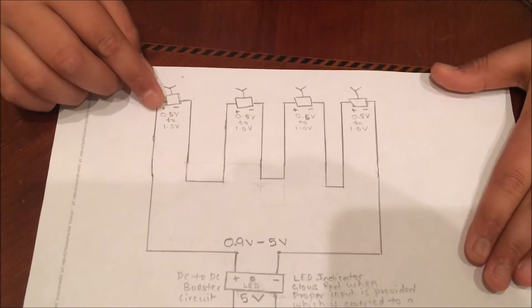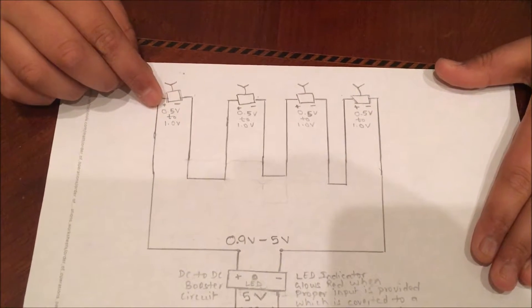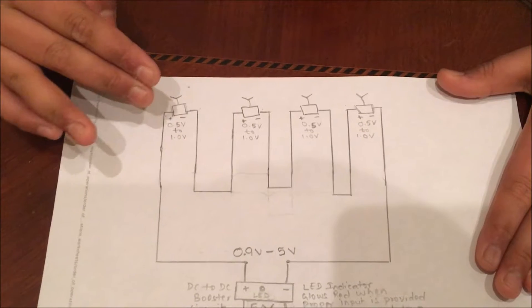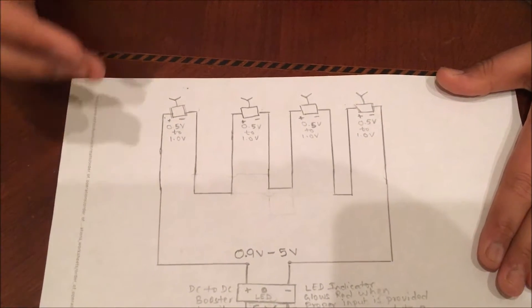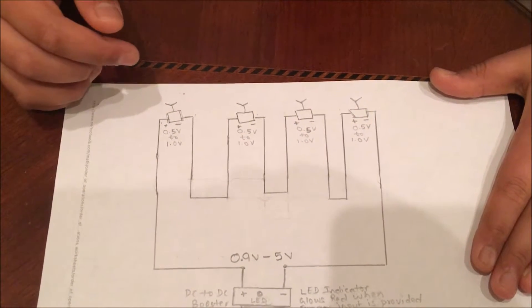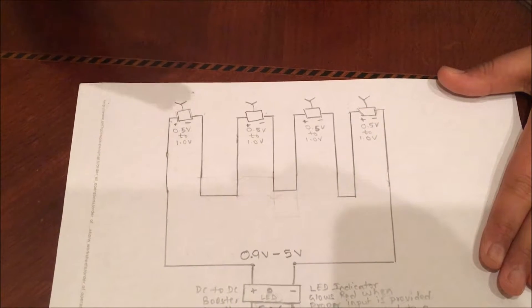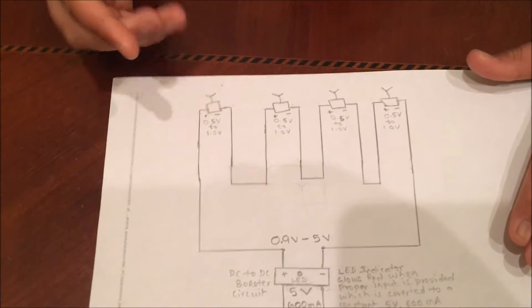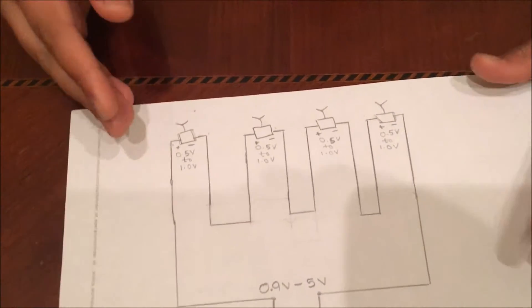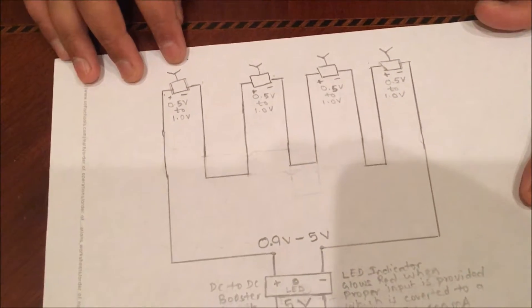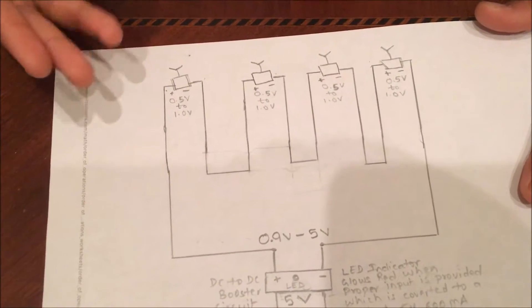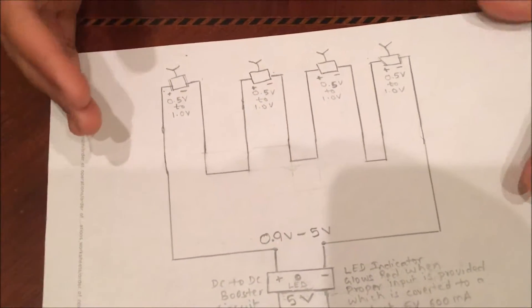The voltage one generator can produce ranges from about 0.5 to 1 volt. This is in a range because of the wind that is hitting the propellers. It depends on the direction of the wind and the force of the wind to turn the propellers. So the higher the RPM of the propellers, the higher the voltage that the generator will produce.